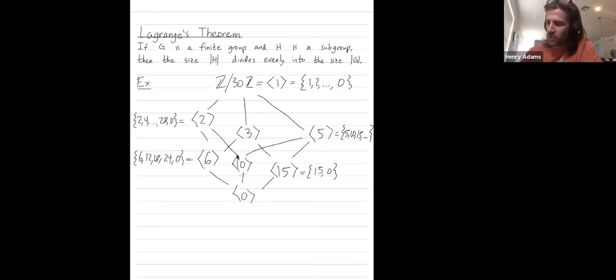More importantly, let's put their sizes. So z mod 30 has size 30. The subgroup generated by 2 has size 15, all 15 even numbers up to 30. Subgroup generated by 5 has size 6: 5, 10, 15, 20, 25, and 30. Subgroup generated by 3 has size 10.